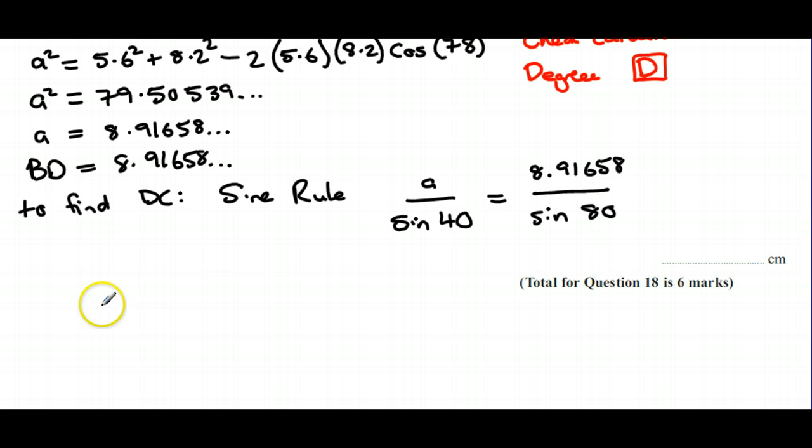If we work that out, so a will be equal to—if we multiply both sides by sine 40, do a bit of rearranging, put the sine 40 on the top on the other side—it's multiplied by 8.91658. If you type that into your calculator, it'll give the wrong answer because it times the 40 by that. What we need to do is put brackets around the 40 because that's the angle and that's what we're taking sine of, and that's all divided by sine 80.